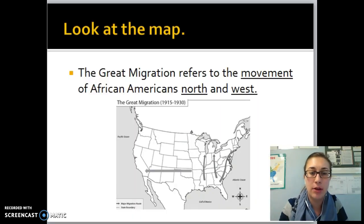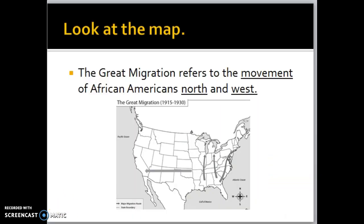Looking at the map in the middle of your page, you can see that the Great Migration refers to the movement of African Americans to the north and to the west. They're coming out of the South, going north, going to the Midwest region, and going west to work in the different industries in those locations and to find jobs. Migration refers to the movement of these people.